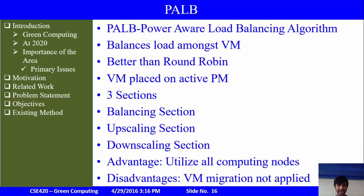PALB has been compared with the round-robin algorithm. Results prove that both adequate resource availability and decreased power consumption can be achieved by PALB compared to non-power-aware algorithms like round-robin. In PALB, a VM is placed on an active physical machine that has the resources to host it based on the VM's request size. If an active node does not have enough resources, a powered-off compute node is activated to host the VM. This algorithm saves power by switching off unused computing nodes.